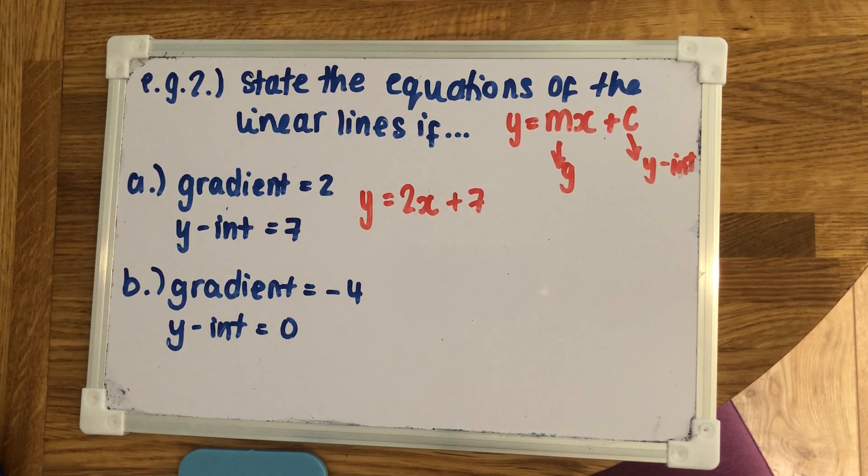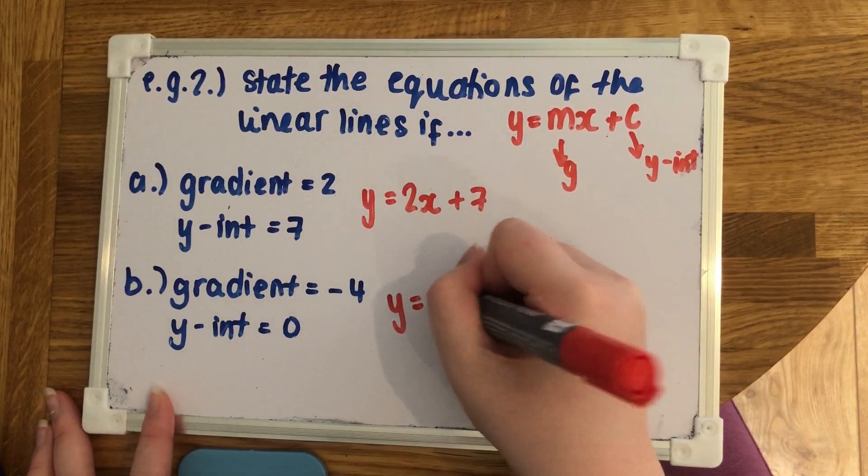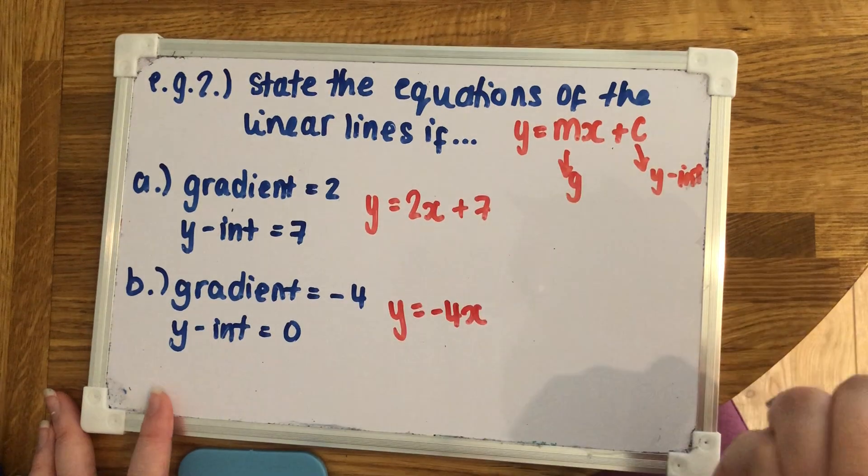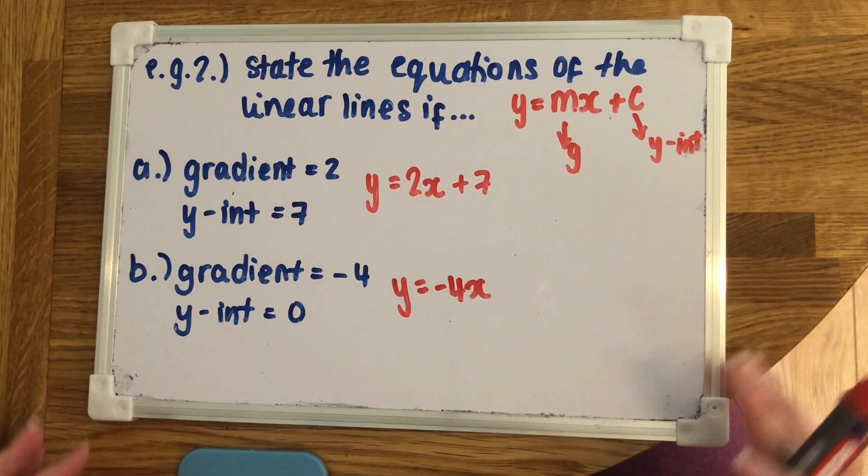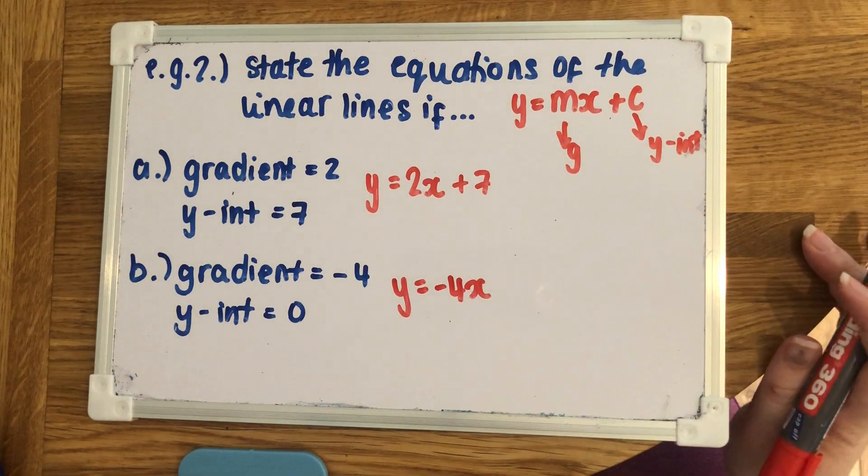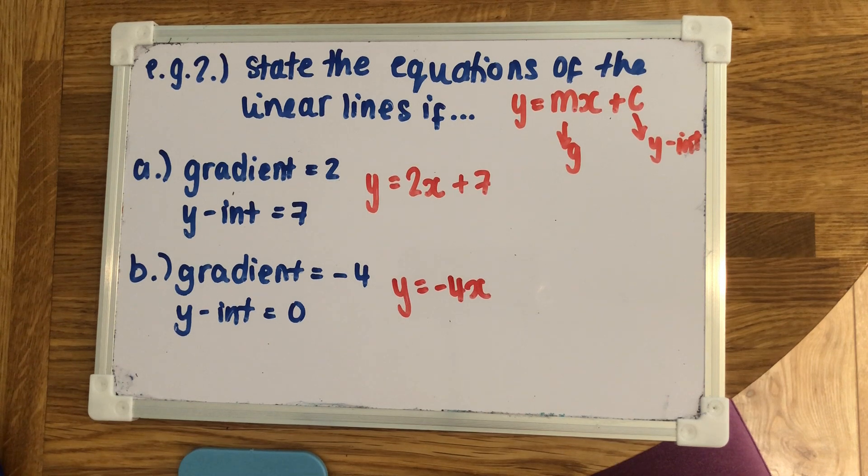And then on the last one, same idea. So here, y equals, the gradient goes in front of the x. Now this one, the y-intercept is, we're told, is 0. So you could write add 0 on the end, but you don't need to. So actually, that is the final answer. y equals minus 4x plus nothing.